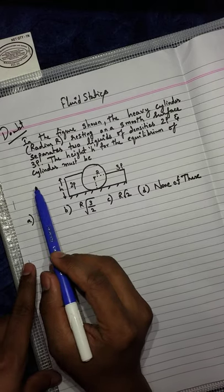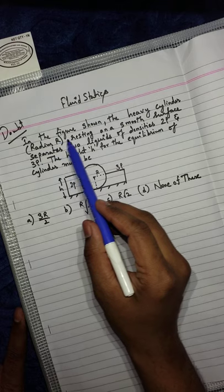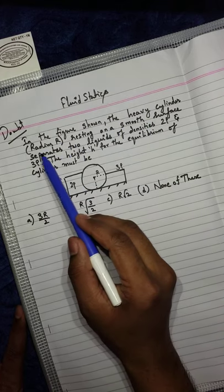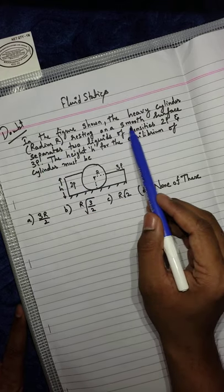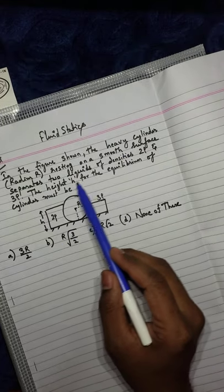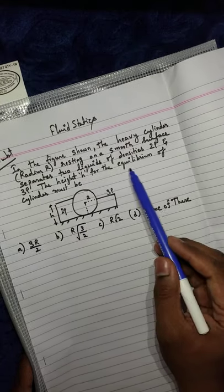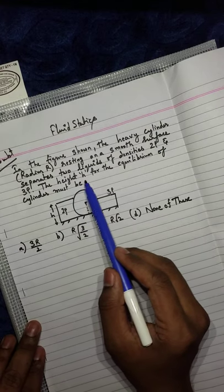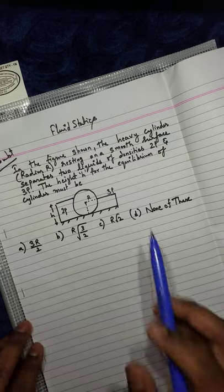Let us solve this question. In the figure shown, the heavy cylinder of radius r resting on a smooth surface separates two liquids of densities 2ρ and 3ρ. The height h for the equilibrium of the cylinder must be determined.